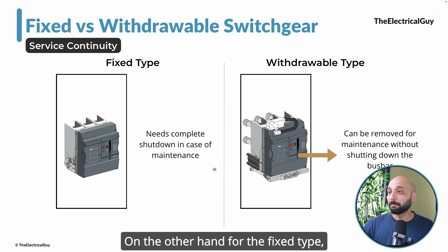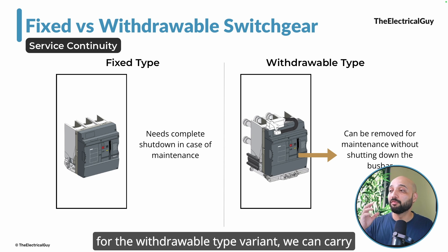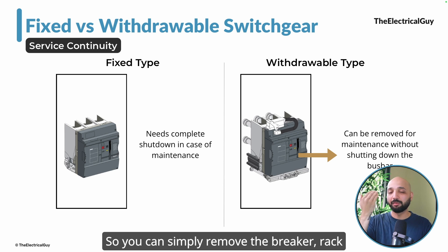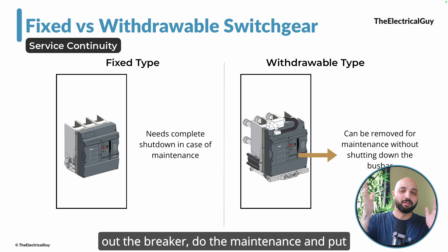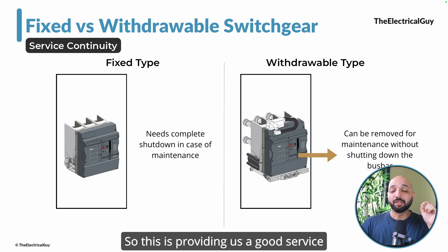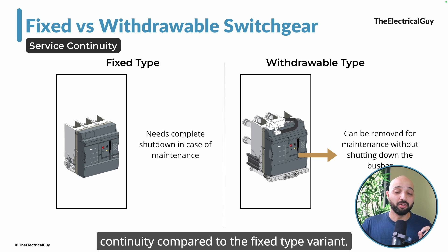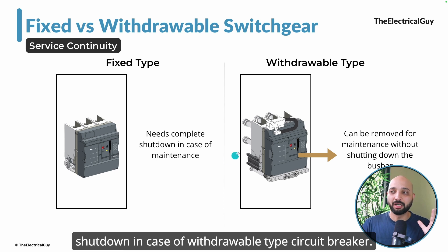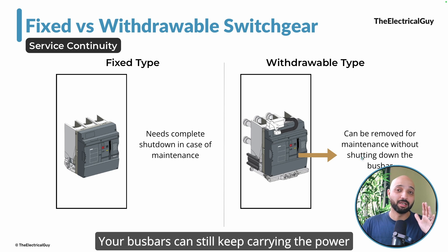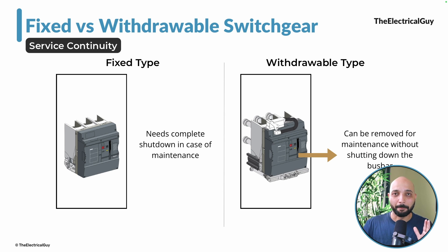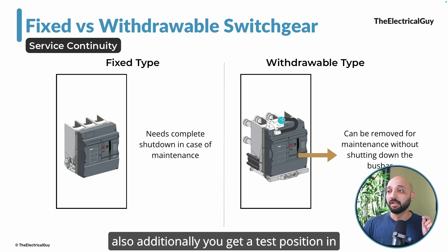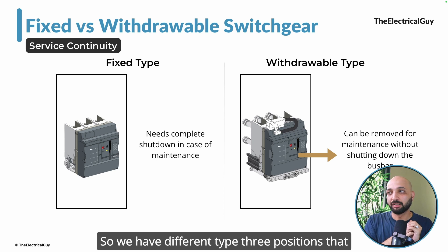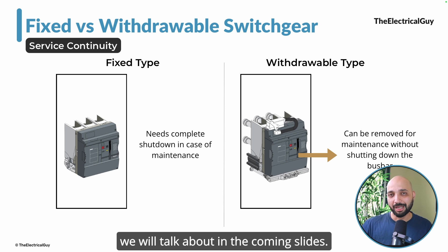For the withdrawable type variant, you can carry out maintenance without impacting other feeders — simply rack out the breaker, do the maintenance, and put it back. This provides much better service continuity compared to the fixed type; you do not need a complete shutdown, and the bus bars can keep carrying power. Additionally, the withdrawable type provides a test position — there are three positions that a withdrawable circuit breaker can offer, which we will discuss shortly.